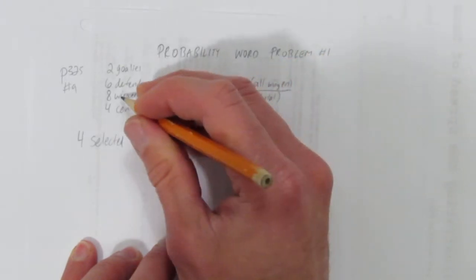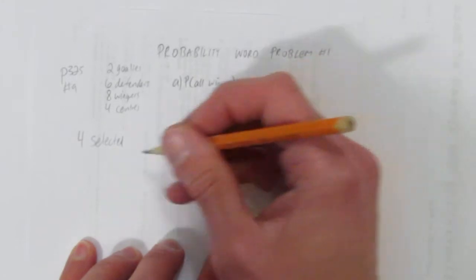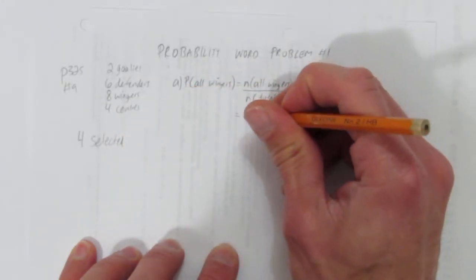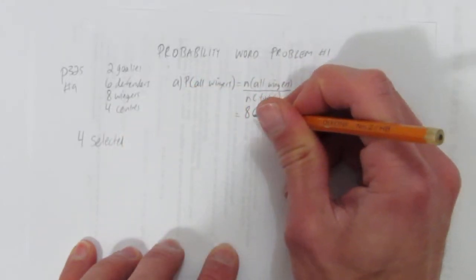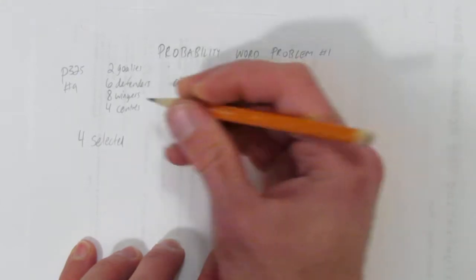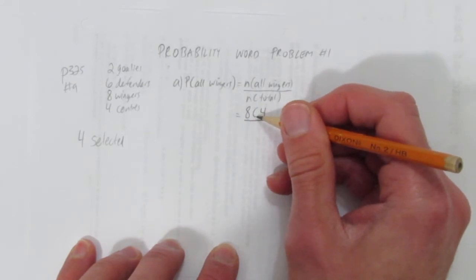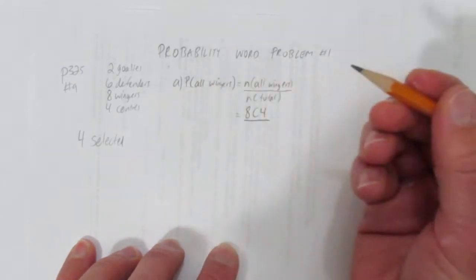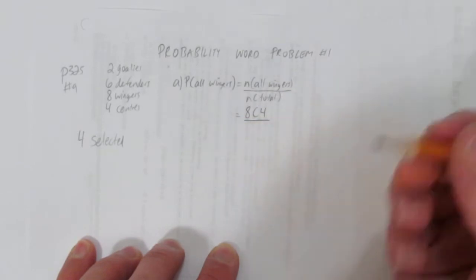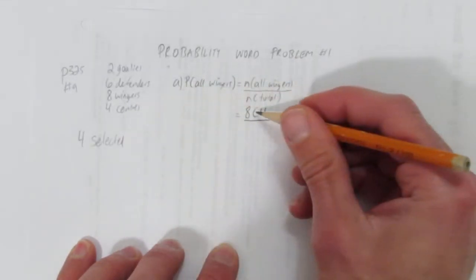So, we have eight wingers, and if we want to look at the number of ways we could choose or select those four wingers, that would be eight choose four. The reason being, we have to pick our four people from among the eight wingers, and it's choose because the order we pick them doesn't matter. Choosing the first winger than the second winger is the same as choosing the second than the first. Order doesn't matter, so it's choose. Eight wingers choose four.